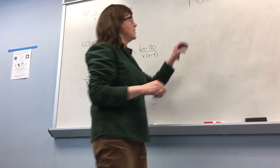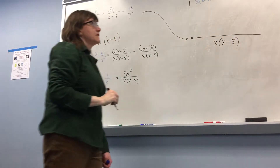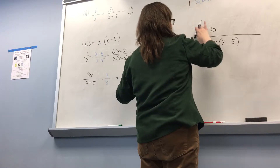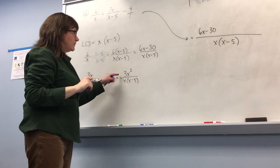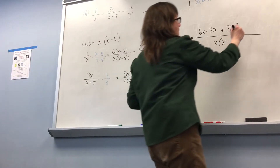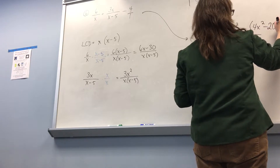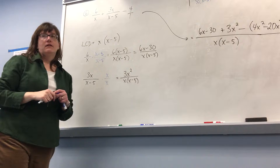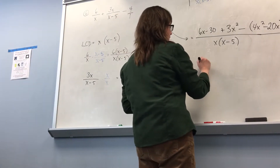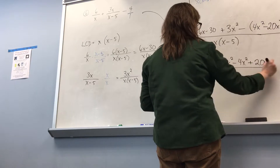Now all of my fractions have the same denominator. I can write all my fractions with that denominator and perform the operation across the top. The first fraction turned into 6x minus 30, plus the second fraction which turned into 3x squared, and then minus. When you have a minus, you need to be careful to subtract everything, so I'm going to put parentheses around 4x squared minus 20x.